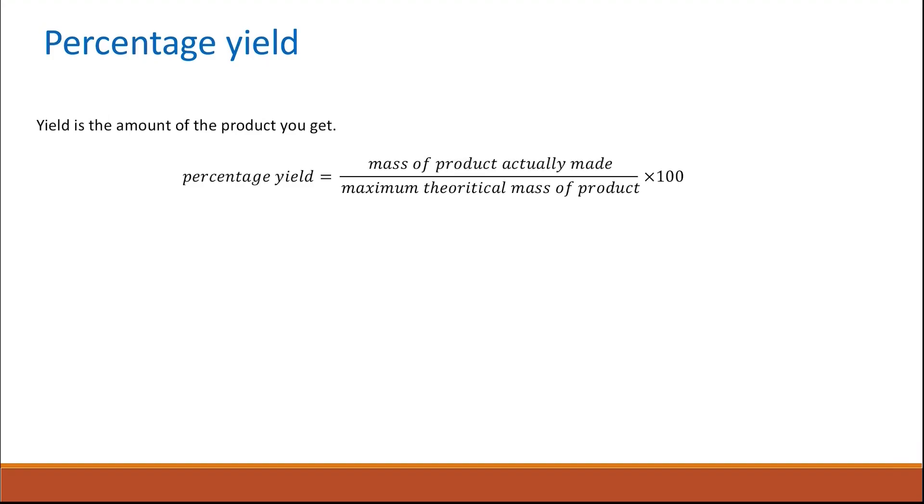So to calculate the percentage yield, we find the mass of the product that we actually made or produced, and divide that by the maximum theoretical mass of the product, and multiply this by 100 to get the percentage yield.